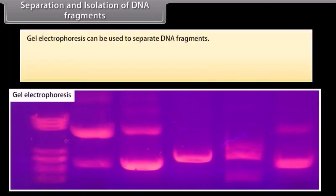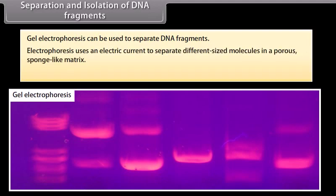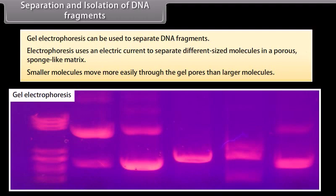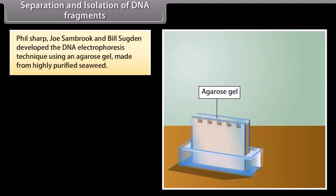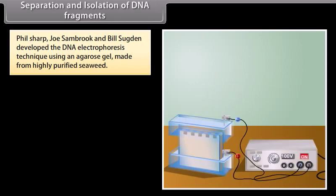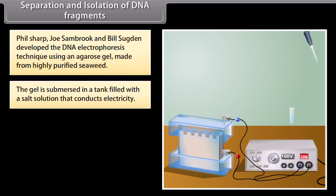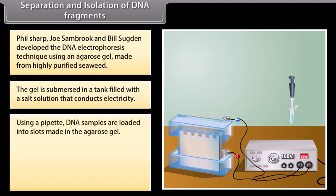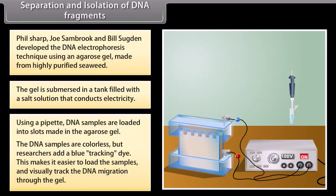Separation and isolation of DNA fragments. Gel electrophoresis can be used to separate DNA fragments. Electrophoresis uses an electric current to separate different sized molecules in a porous, sponge-like matrix. Smaller molecules move more easily through the gel pores than larger molecules. Phil Sharp, Joe Sambro, and Bill Sajjan developed the DNA electrophoresis technique using an agarose gel made from highly purified seaweed. The gel is submerged in a tank filled with a salt solution that conducts electricity. Using a pipette, DNA samples are loaded into slots made in the agarose gel. The DNA samples are colourless, but researchers add a blue tracking dye, making it easier to load the samples and visually track DNA migration through the gel.